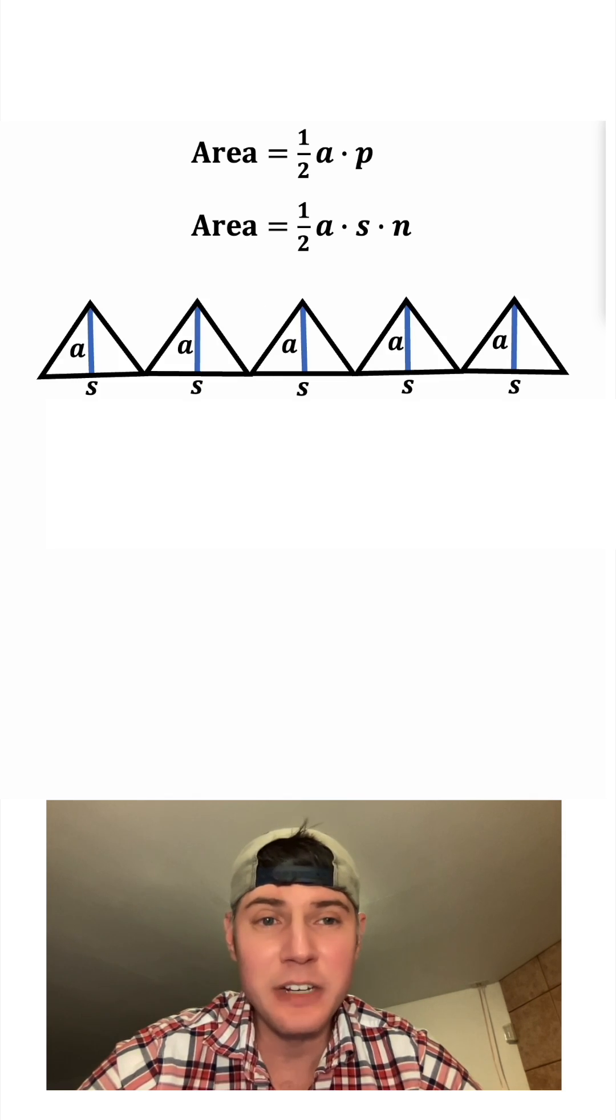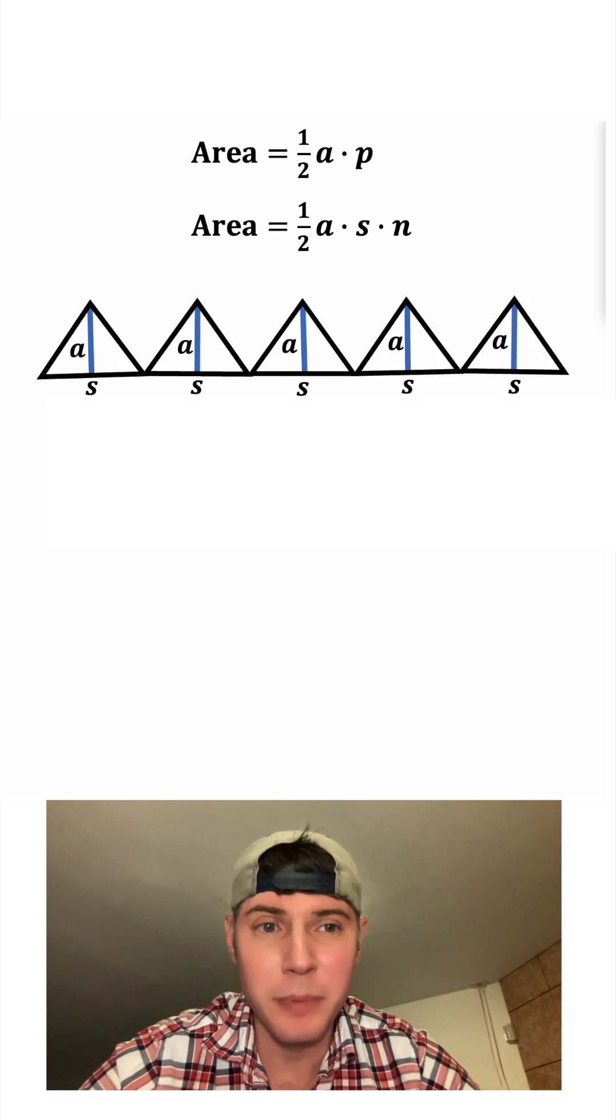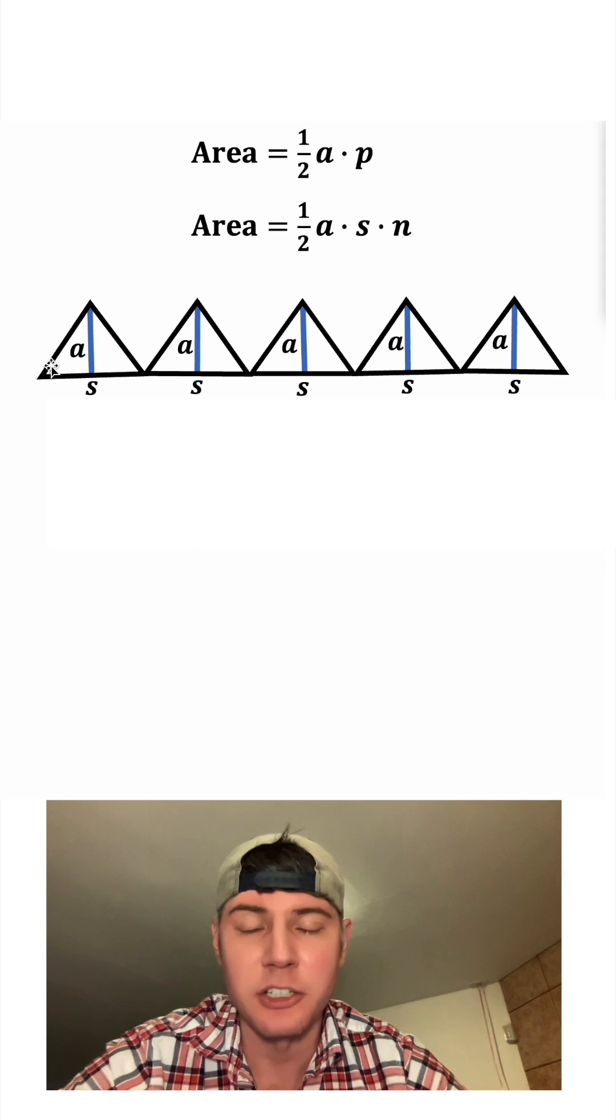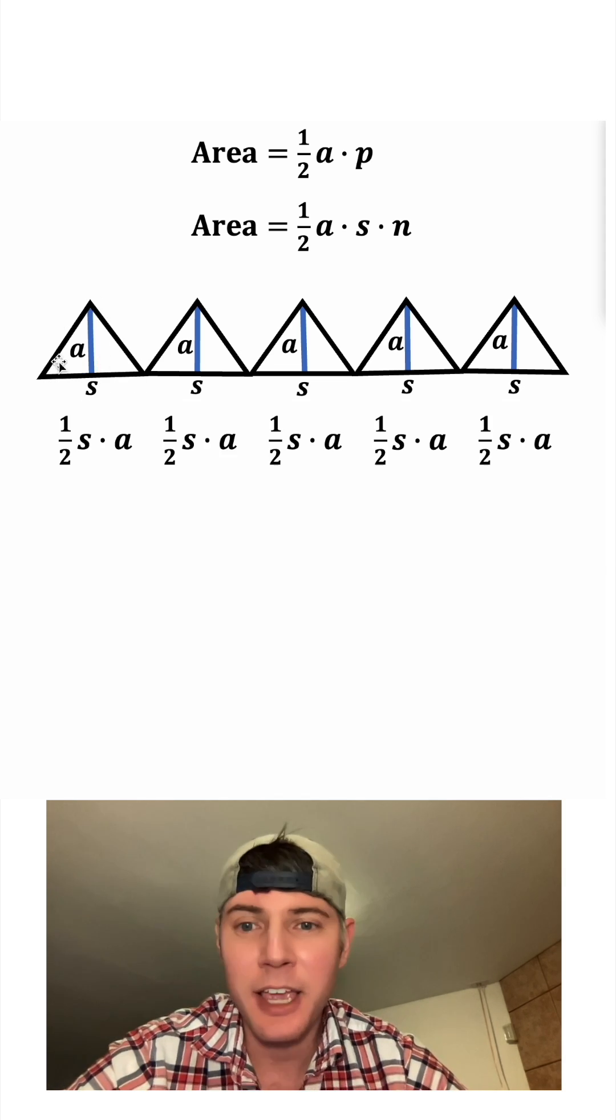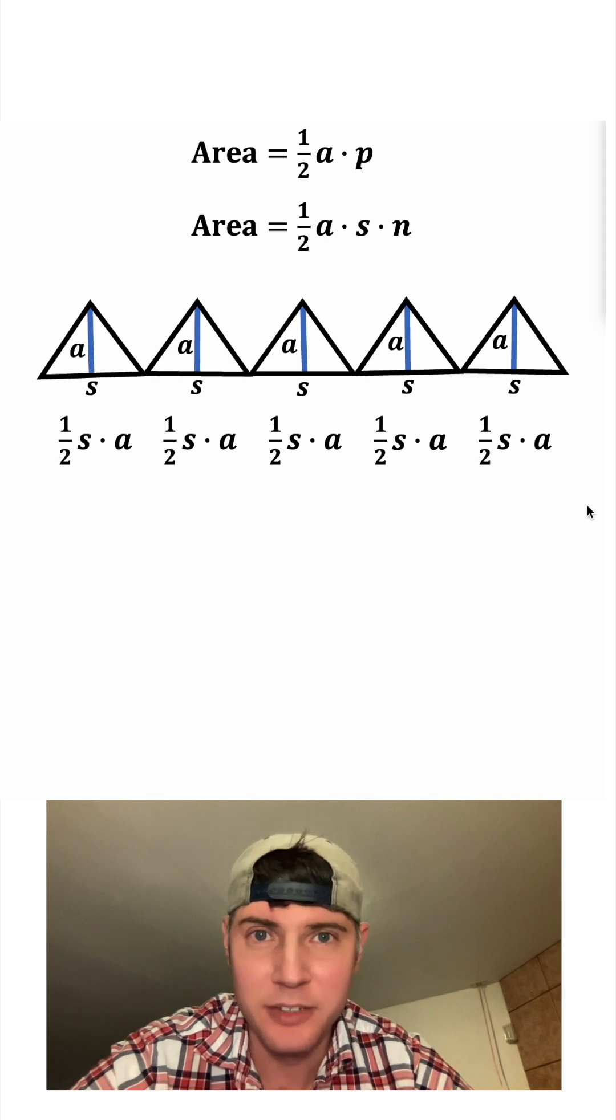And let's scoot this up. The area of an individual triangle is one half base times height. So for this first triangle, it's going to be one half. The base is S and the height is A. And all of these triangles are going to be one half S times A.